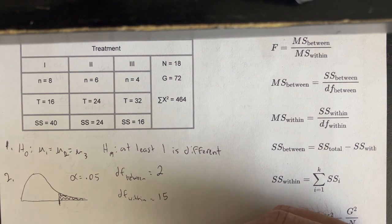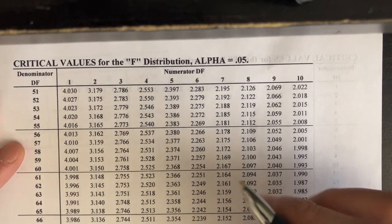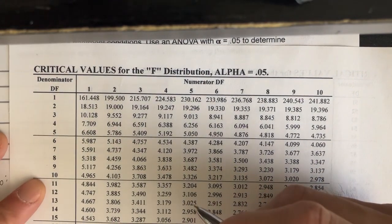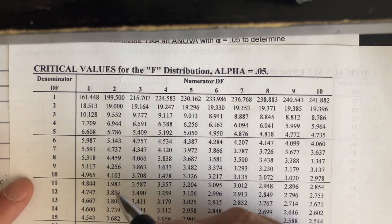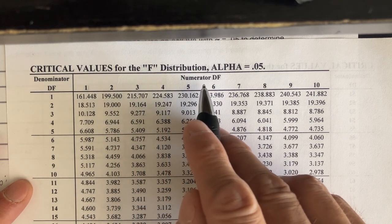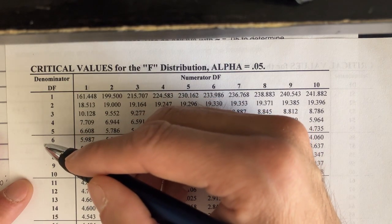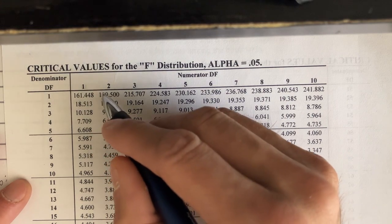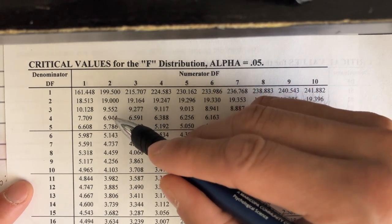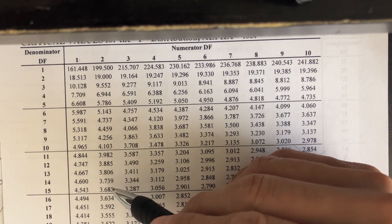Now we look up the F-table. This table is specifically for alpha equal to 0.05. The top row shows the numerator degrees of freedom (between) and the left column shows the denominator degrees of freedom (within). Our df between is 2, so we scan down that column to df within of 15, and the critical value is 3.68. That's our cutoff value.